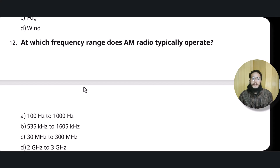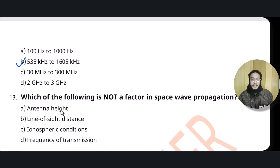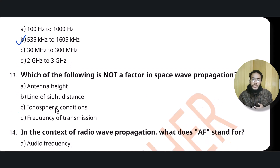Question twelve: at what frequency does AM radio operate? Amplitude modulated radio operates in the 535 to 1605 kHz frequency range — you should remember this fact.